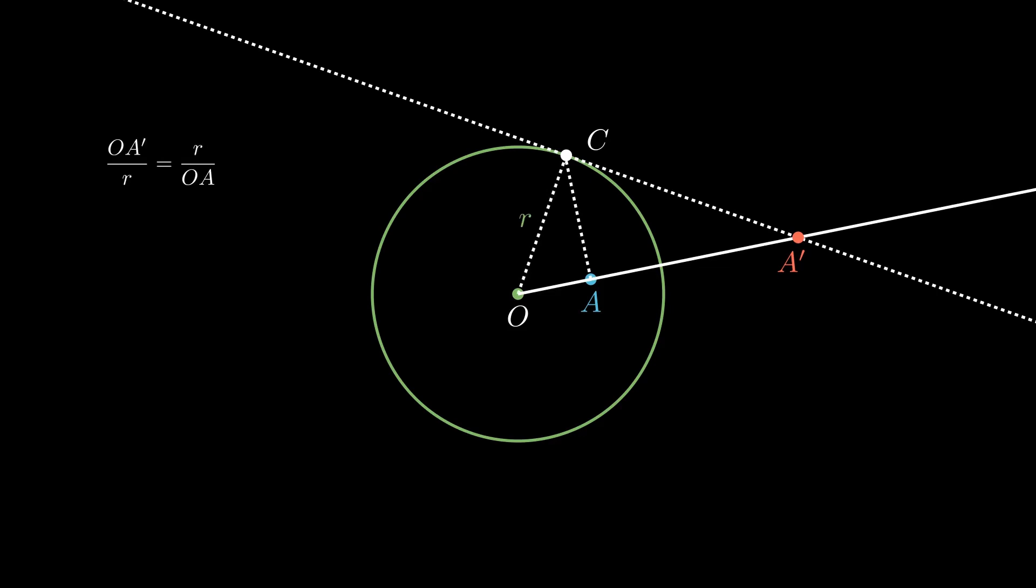The two triangles we've drawn are similar, which means the ratio of their two sides is equal. This gives us the formula for circle of inversion. OA, which is this distance here, multiplied by OA dash, which is this distance here, is equal to R squared, the radius of the circle of inversion squared. And this is the formula that we will use when we solve problems using circle inversion.